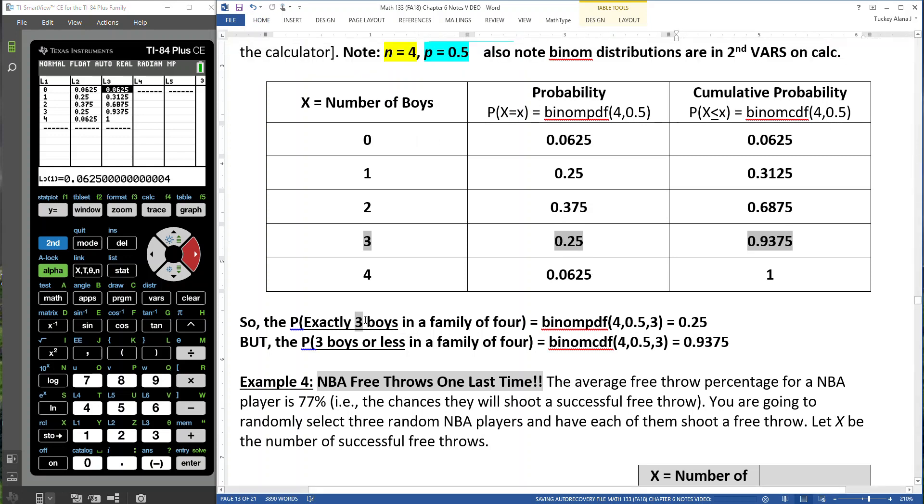So the chances of exactly three boys in a family of four would be 0.25. It's binom PDF 4, 0.5, 3, right? So you want exactly three boys? Fine, that's binom PDF 4, 0.5, 3. If you want three boys or less, right? Well, three boys or less would be up to and including three. So that would be binom CDF 4, 0.5, 3.